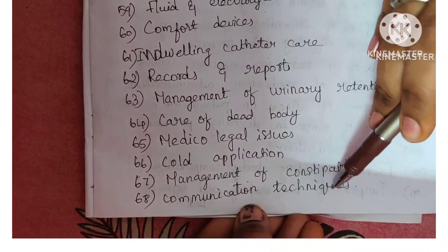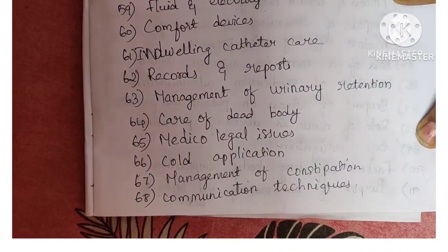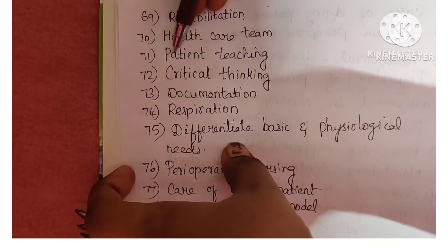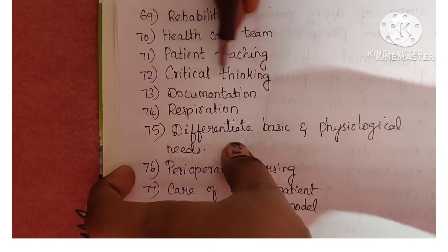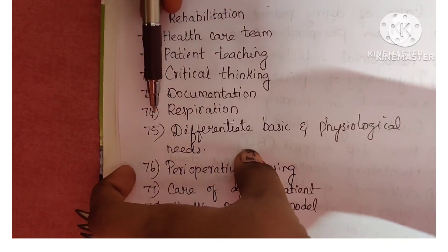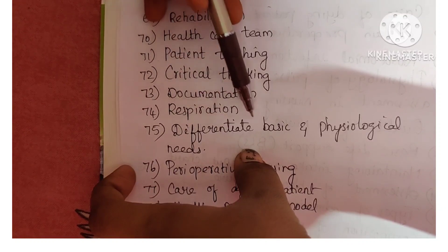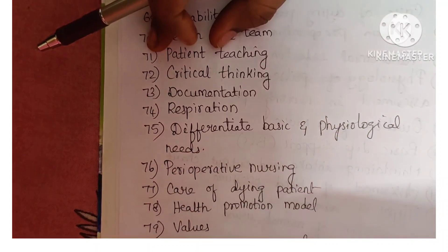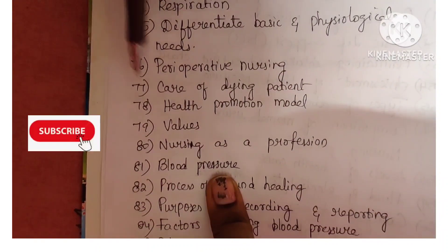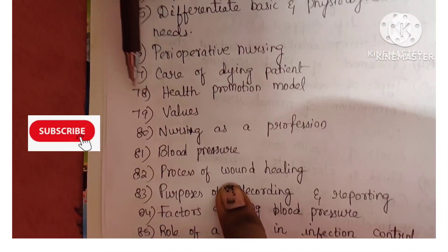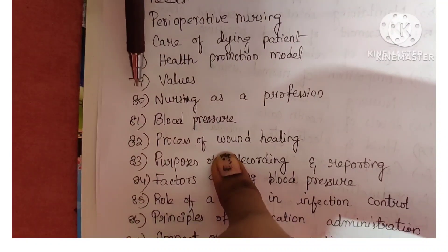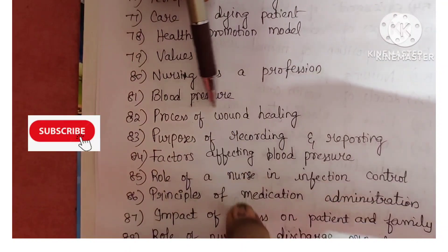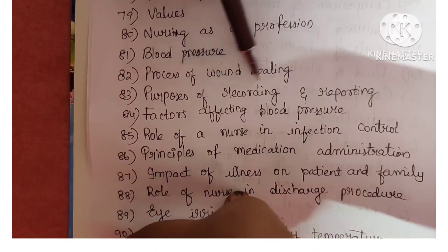Next is management of constipation. Next is communication techniques. Next is rehabilitation. Next is health care team. Next is patient teaching. Next is critical thinking. Next is documentation. Next is respiration. Next is differentiating basic and physiological needs. Next is perioperative nursing. Next is care of dying patient. Next is health promotion model. Next is values. Next is nursing as a profession. Next is blood pressure. Next is process of wound healing. Next is purposes of recording.